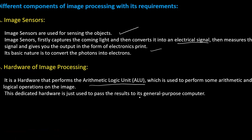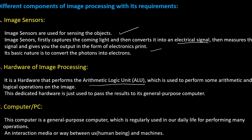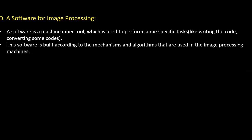This dedicated hardware is used to pass the result to a general purpose computer. The third component is a computer or PC, which is a general purpose computer regularly used in daily life for performing many operations — like your laptops, tablets, anything — serving as an interaction medium between human beings and the machine. The next component is software for image processing. Software is a machine inner tool used to perform specific tasks like writing code or converting code, and is built according to the mechanism and algorithms used in the image processing machines.